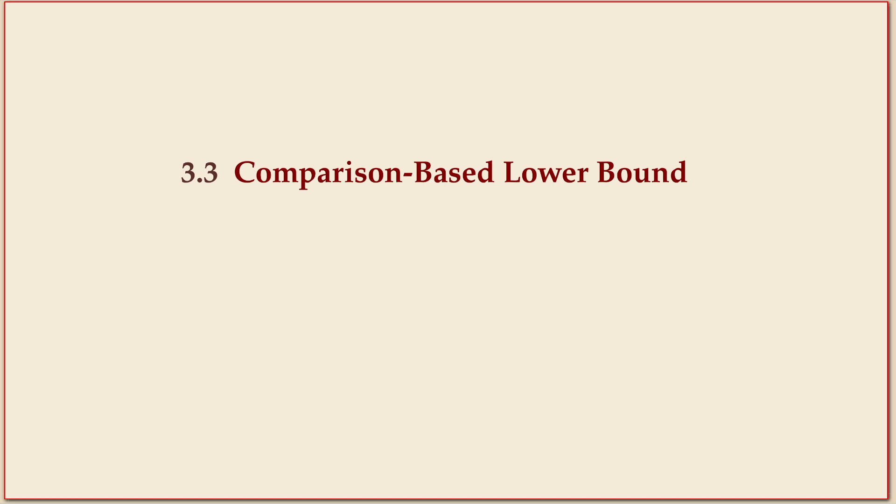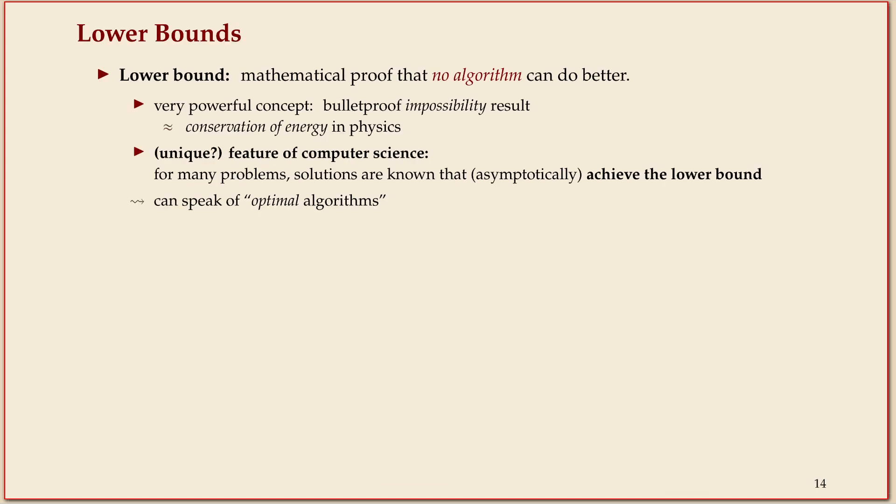In the next section, I want to discuss a lower bound for sorting and impossibility results that basically imply that the two methods we've just seen, merge sort and quicksort, are almost best possible, but in a specific sense. And I want you to dig behind this superficial statement.